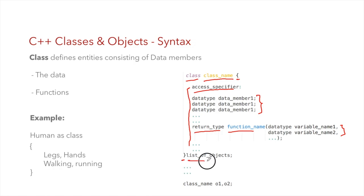A typical function declaration has a return type, function name, and a list of parameters in parentheses. At the end of the class definition you have the list of objects. There are two ways to create objects: immediately after the class declaration like we do with structures, or using the class name and object name anywhere in the program.